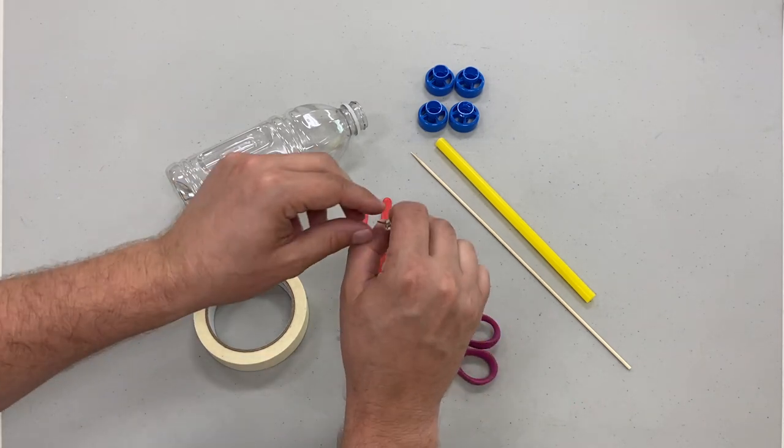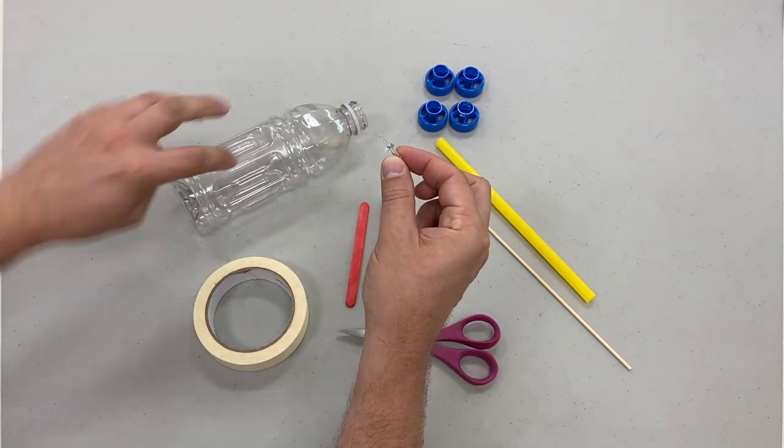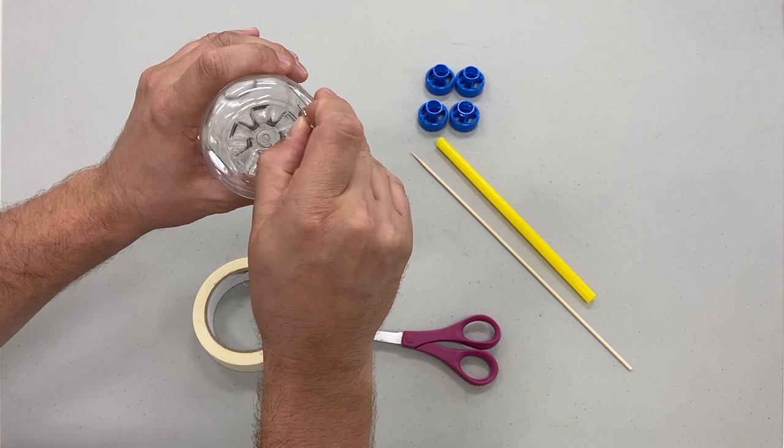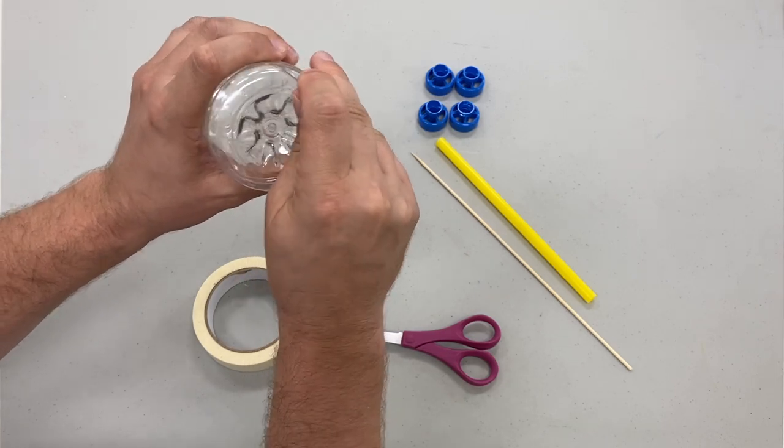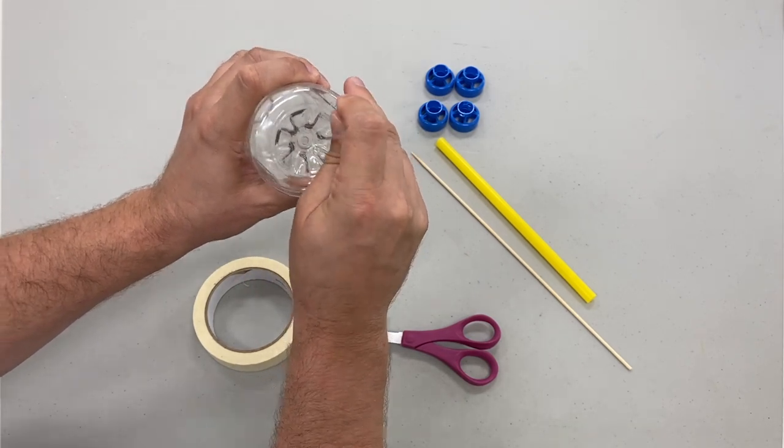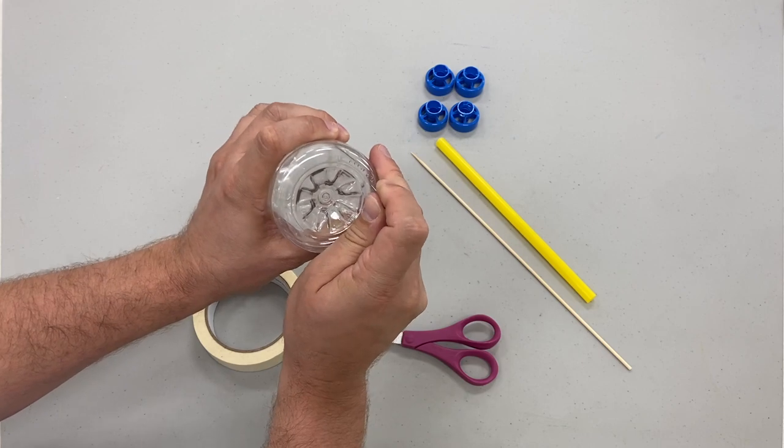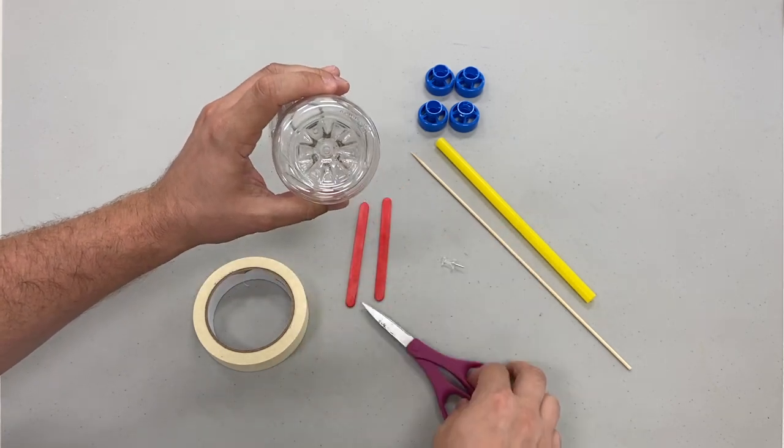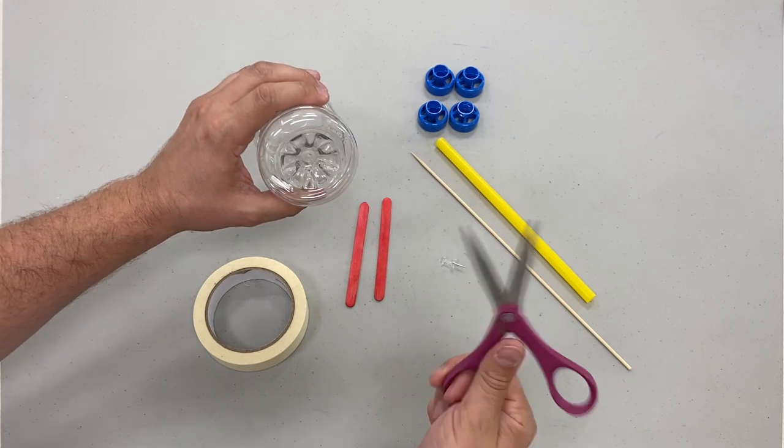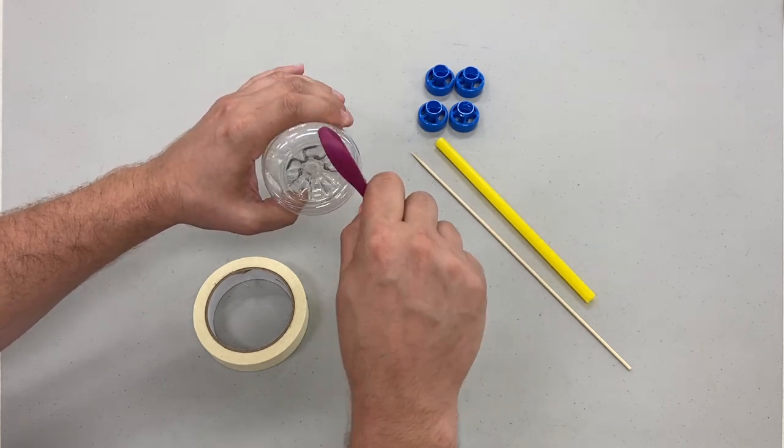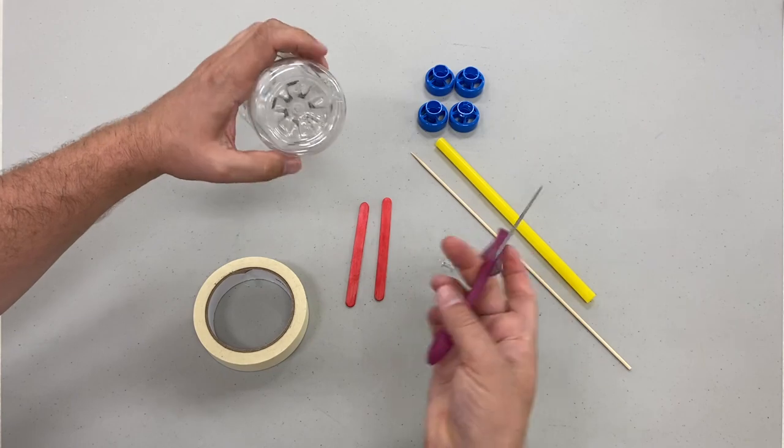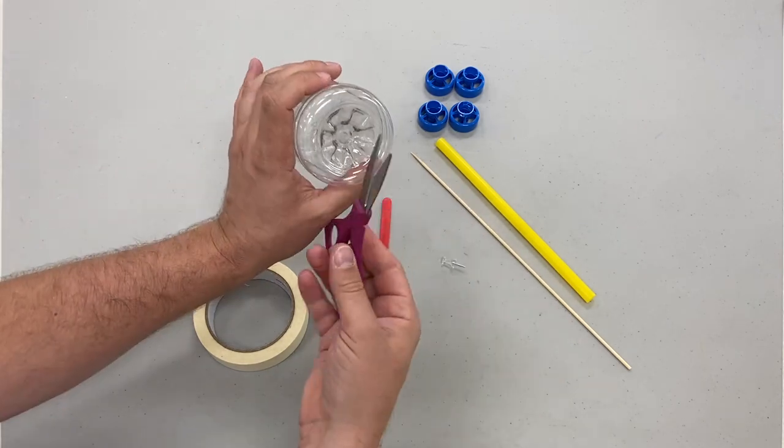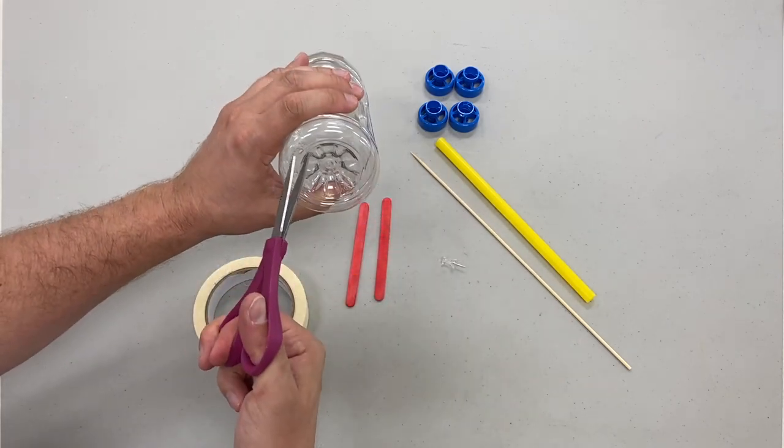To begin, take your push pin. Be careful with it because it is pointy. Flip your bottle upside down and begin poking some holes in it in a straight line. This will help weaken the plastic. Next, take your scissors and open them up. Use one edge to poke through the weakened plastic that you just made. Now it'll be nice and easy for you to slip your scissors in and cut around the bottom of the bottle to remove it.